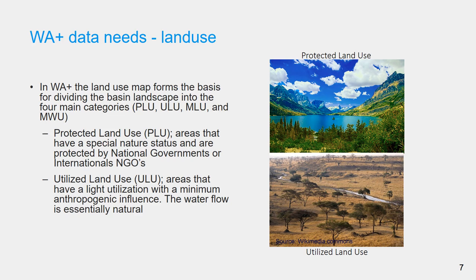Protected land use includes areas that have a special nature status and are protected by national governments or international NGOs. It relates to environmentally sensitive land use and natural ecosystems that are set aside for environmental protection. National parks, Ramsar sites, drinking water, and coastal protection zones are typical examples of protected land use.